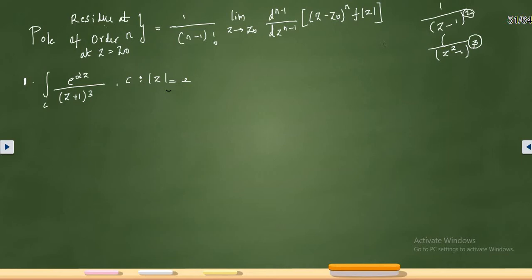The residue of f(z) at a pole of order n at z = z₀ is equal to 1/(n−1)! times the limit as z tends to z₀ of the (n−1)th derivative with respect to z of (z − z₀)ⁿ · f(z). This is the formula to find the residue when we have a pole of order greater than 1.